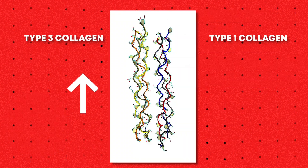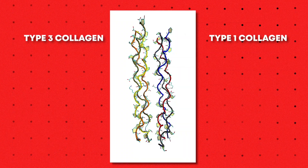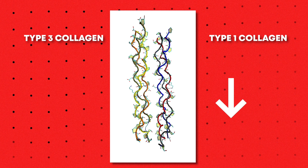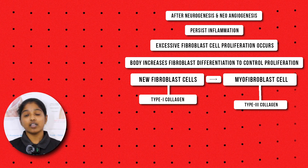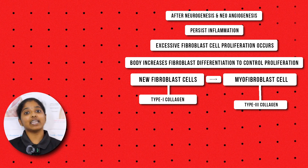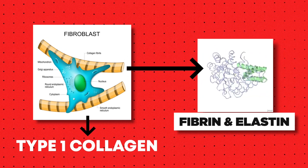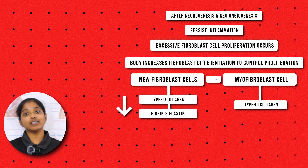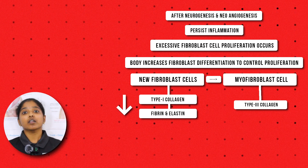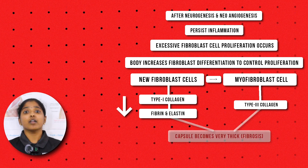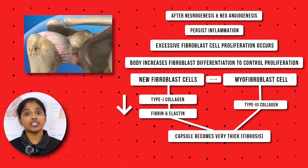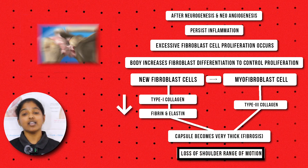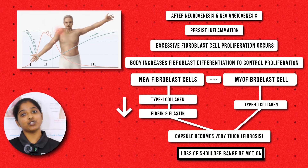The myofibroblast cells will produce type 3 collagen, so the type 1 collagen content — produced by fibroblast cells — will be reduced in the shoulder joint. Consequently, fibrin and elastin content also reduces. When fibrin and elastin are reduced, the capsule becomes very thick because fibrin and elastin provide elasticity, extensibility, and flexibility to the shoulder joint. This is how the patient develops shoulder stiffness.